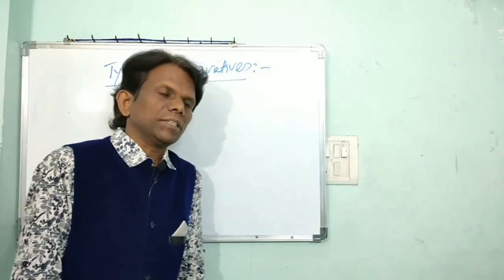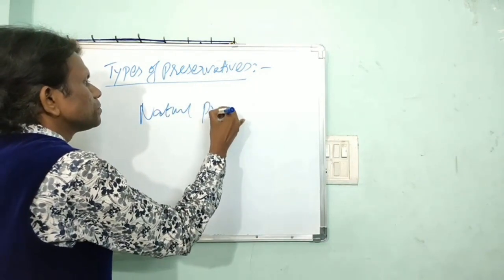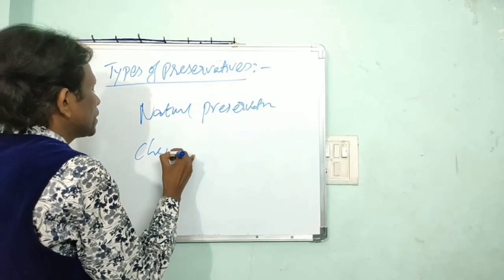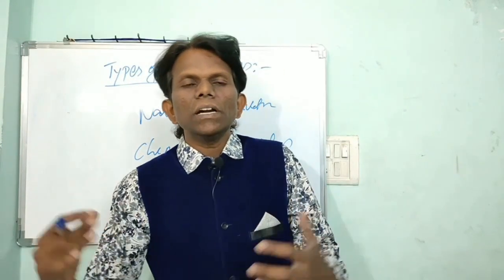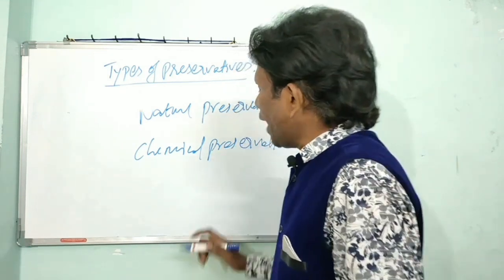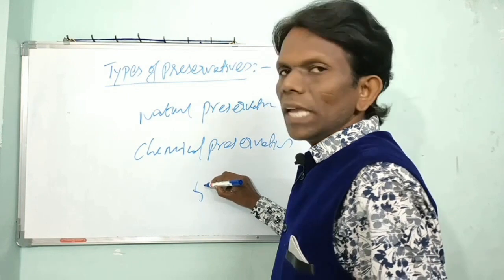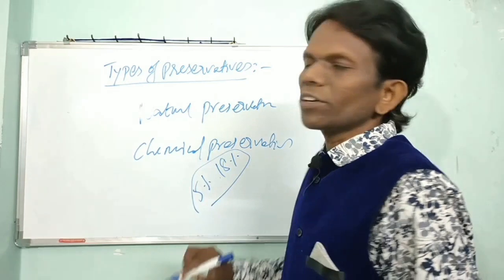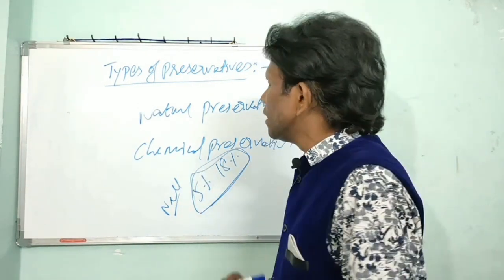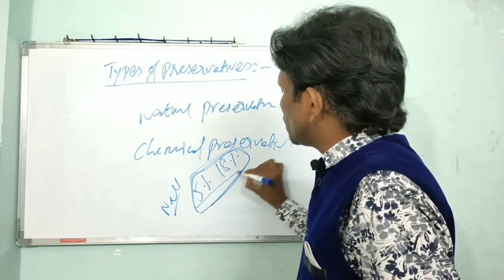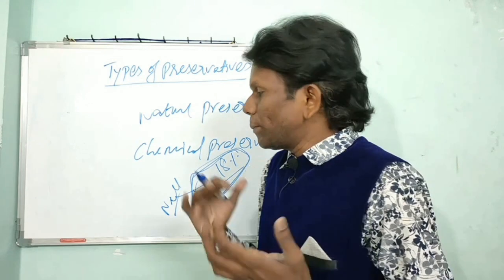Let us discuss about preservatives. Preservatives are classified into natural preservatives and chemical preservatives. Natural preservatives include marination or brining solutions. If you add salt (NaCl) at 5% to 18% content, microorganisms will not grow because the solvent exhibits high osmotic pressure, causing microbial cells to get dehydrated. This is the old and traditional natural preservation mechanism — salting and brining.